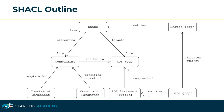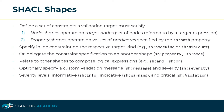This diagram summarizes the main concepts. The data graph is validated against the shapes graph that contains a number of shapes. Each shape targets an arbitrary number of RDF nodes and applies constraints on them. SHACL constraints are internally represented by constraint components. Within a shape, constraints manifest as RDF properties parametrizing the test. Shapes are the backbone of SHACL validation — they define a set of constraints a validation target must satisfy.